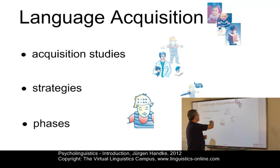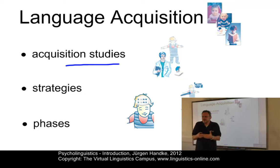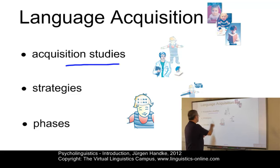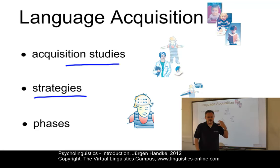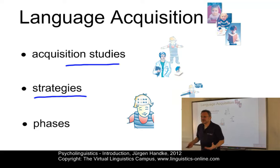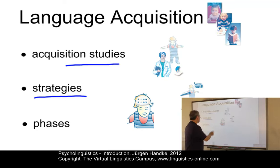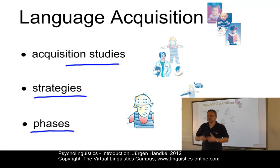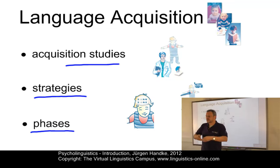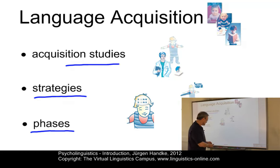There are some central issues in language acquisition. First of all, we have to deal with acquisition studies — how can we study young children who cannot answer our questions at a very early age, so we have to perform experiments with them. What are the central strategies that children apply when they acquire their mother tongue? For example, they overgeneralize morphological aspects in what they produce. And finally, what are the central phases — what comes first, what happens next, and when do children start pronouncing their first words?